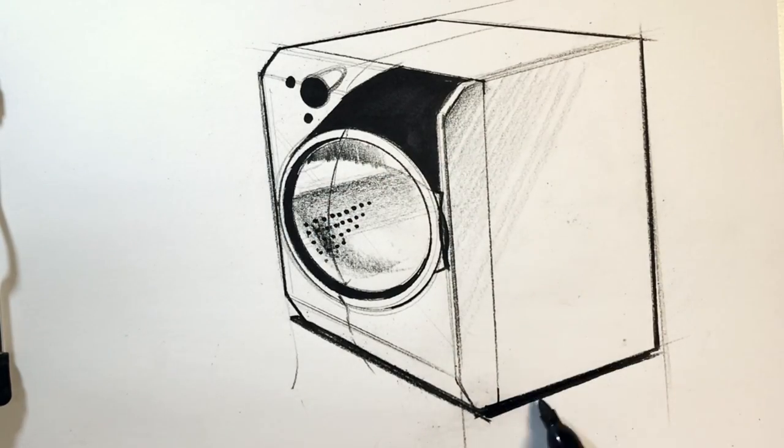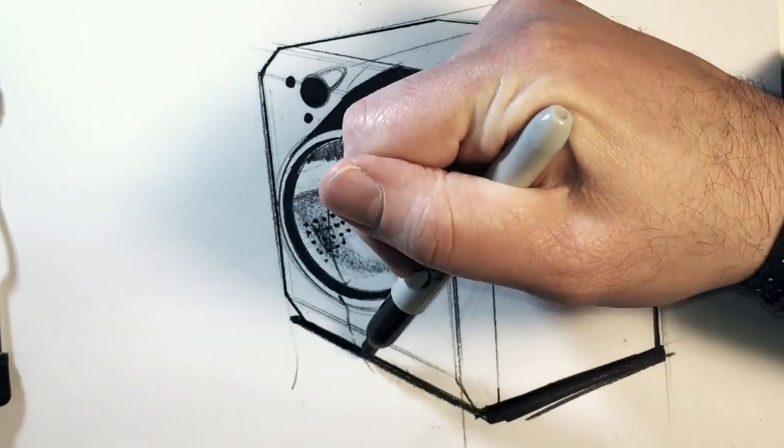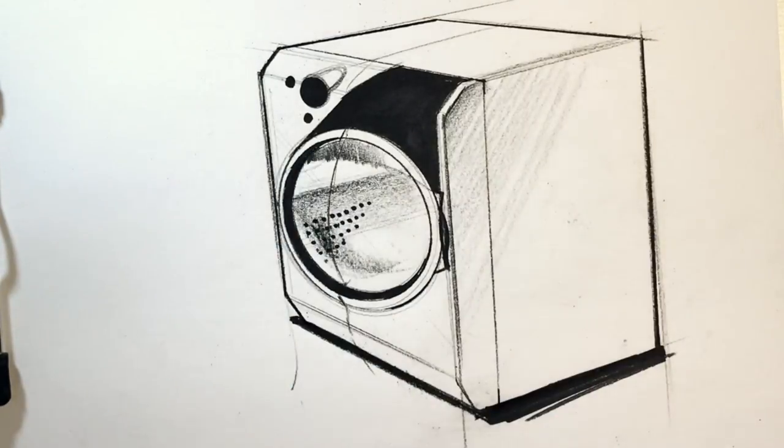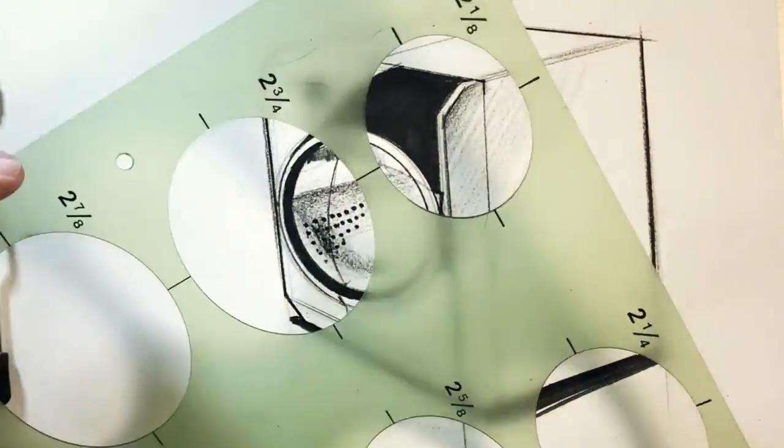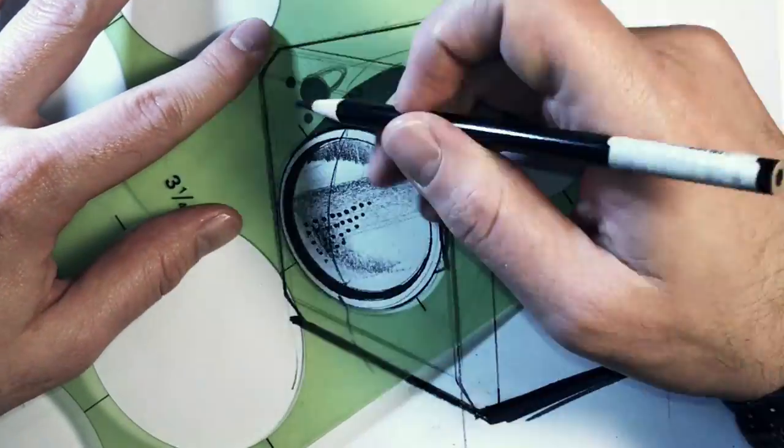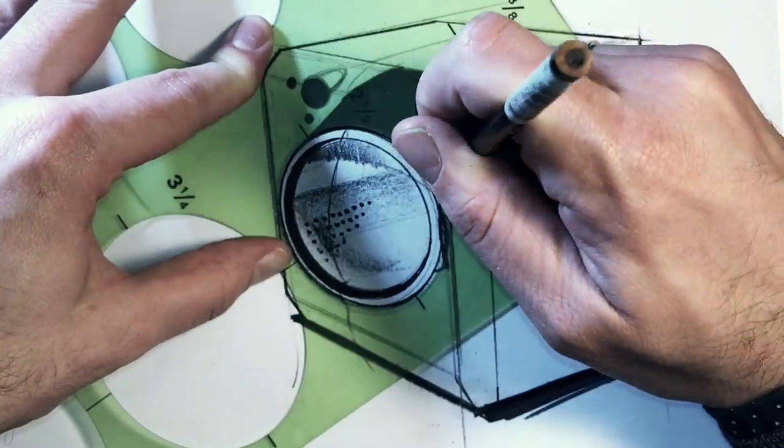Pumping up my ground plane, I'm gonna come back in with my ellipse guides. Be great if I could remember what size the ellipse was. Really darken in that door just so it doesn't feel out of place with the sharpie.